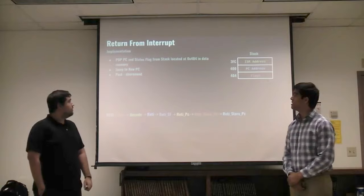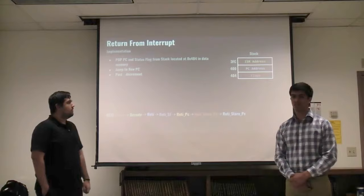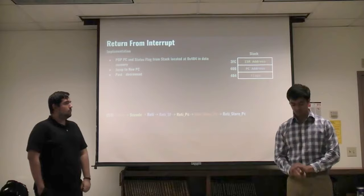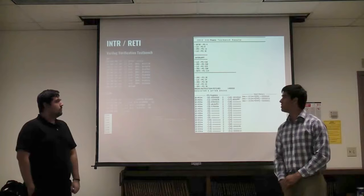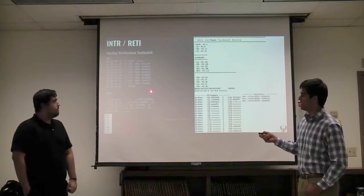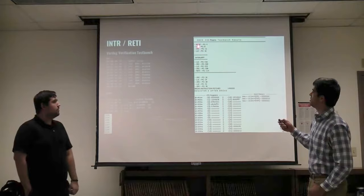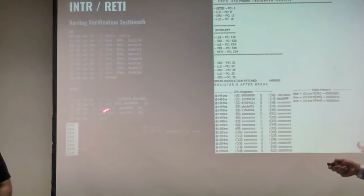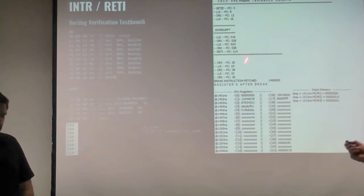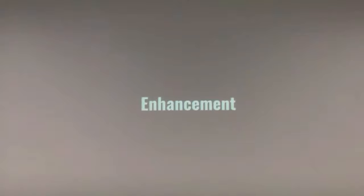Return from interrupt pops the PC and status flag from the stack. We pop from location 404 in data memory because that's where the stack pointer is, then jump to the new PC — where we got interrupted — using post-decrement. The test bench verification shows our main program with no interrupt initially. After 300 time units, the interrupt signal is enabled. We get interrupted at the fourth instruction, execute the ISR, and the last ISR instruction is return from interrupt — picking up where we left off. You can see the PC change from 16 to 512 and then back to 20 after returning from the interrupt.